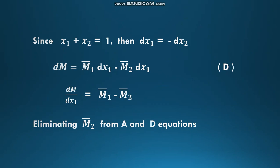Since x1 plus x2 equals 1, dx1 becomes equal to minus dx2. Substituting this into the above equation, we get dM equals M1-bar dx1 minus M2-bar dx1. Taking dx1 common, the equation for dM/dx1 becomes equal to M1-bar minus M2-bar.